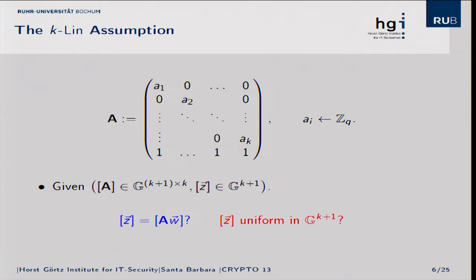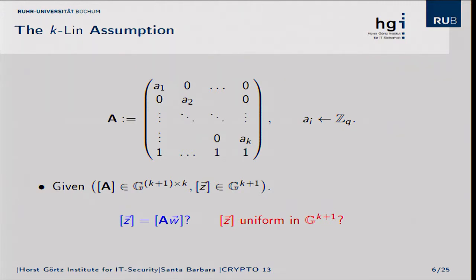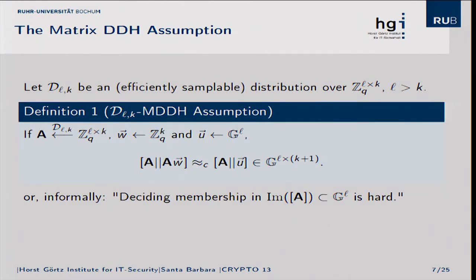In the K-Lin case, we are given a matrix which has K different elements in the diagonal and a last row of only ones. We have to decide whether a certain vector in G to the K+1 is in the image of A or not. This motivates us to introduce the matrix Diffie-Hellman assumption framework, where the assumption says that if DLK is an efficiently sampleable distribution of matrices of size L times K, then two distributions are computationally indistinguishable: on one side, the matrix A concatenated with a random vector in the image of A, and on the other hand, A concatenated with a uniform vector in G to the L. Informally, deciding membership in the image of A is hard.